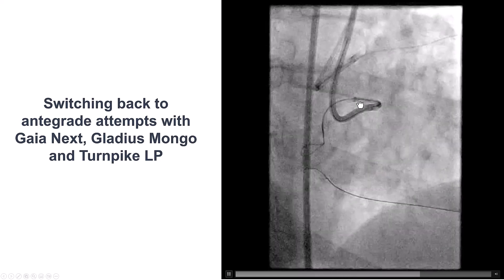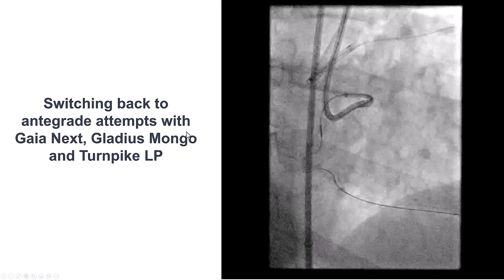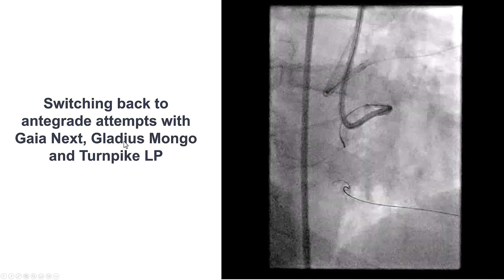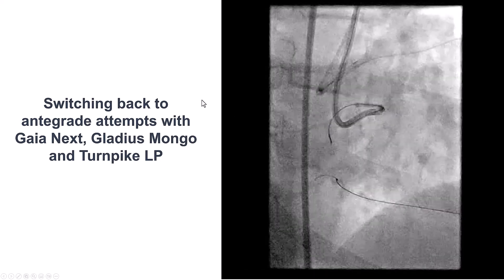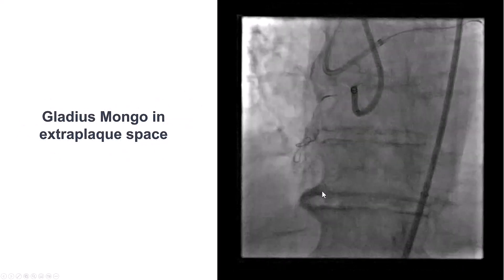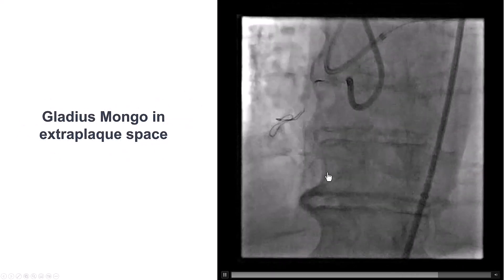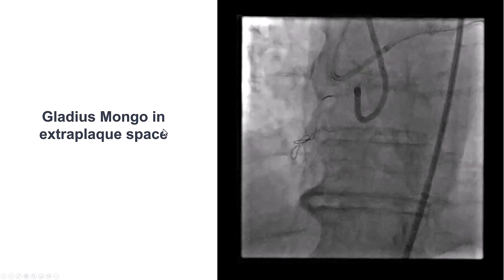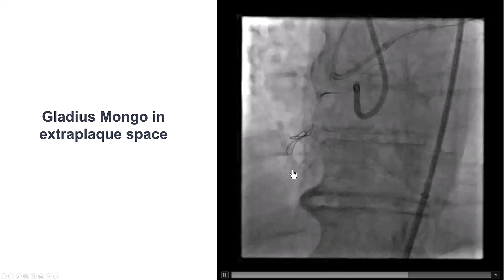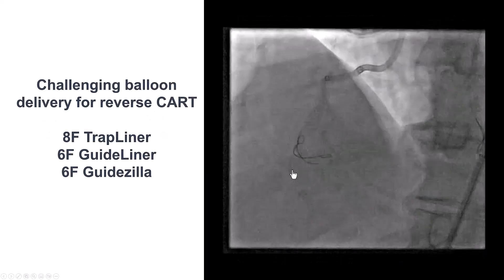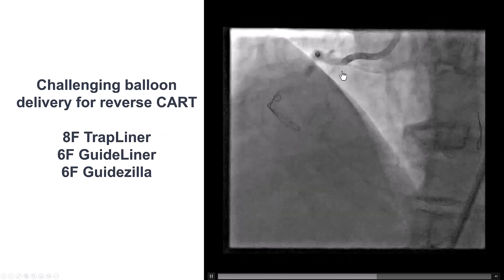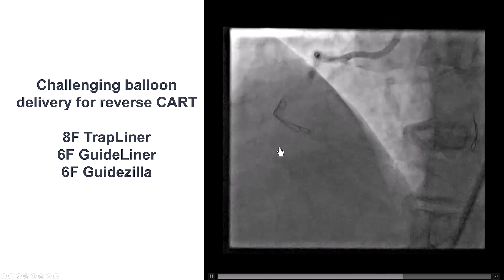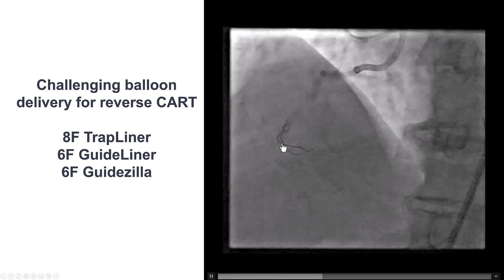So we went back to the antegrade direction and used various guidewires with the ICLP microcatheter, trying to knuckle and go in the extraplaque space. Eventually, we were able to advance the Gladius Mongo wire into the extraplaque space. Our plan was to do reverse CART — advance the guide extension down and perform guide extension reverse CART.